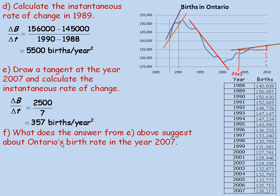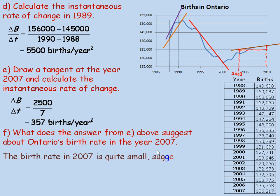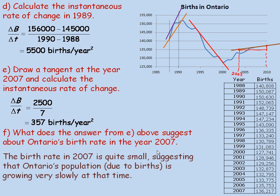Part F asks what the answer from E suggests about Ontario's birth rate in 2007. The data shows births around 134,000 to 136,000 — increasing, but only slowly. Since the tangent is not very steep, the rate of change is small, meaning the birth rate in 2007 is growing only very slowly. This suggests Ontario's population due to births is growing, but at a very slow rate at that time. And that's the end of the lesson.